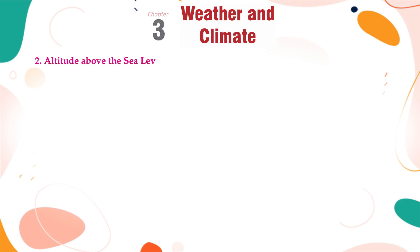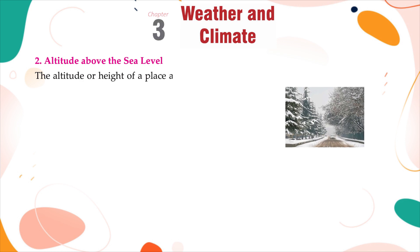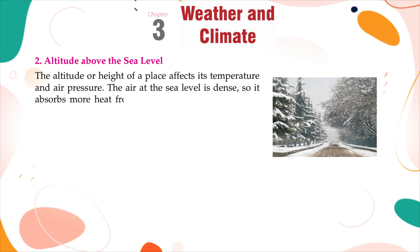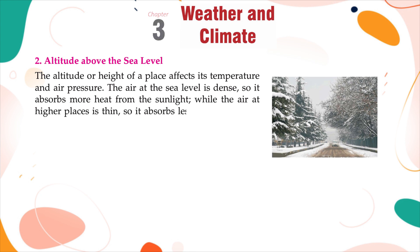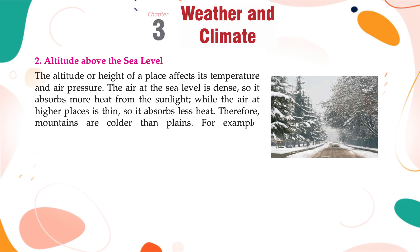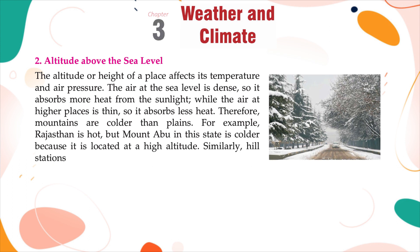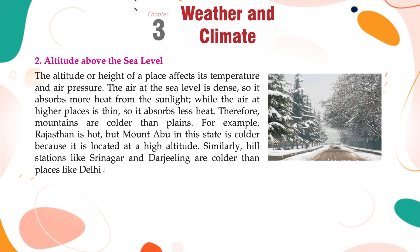Altitude above sea level. The altitude or height of a place affects its temperature and air pressure. The air at sea level is dense, so it absorbs more heat from sunlight, while the air at high places is thin, so it absorbs less heat. Therefore, mountains are cooler than plains. For example, Rajasthan is hot, but Mount Abu in this state is colder because it is located at a high altitude. Similarly, hill stations like Srinagar and Darjeeling are colder than places like Delhi and Chennai.